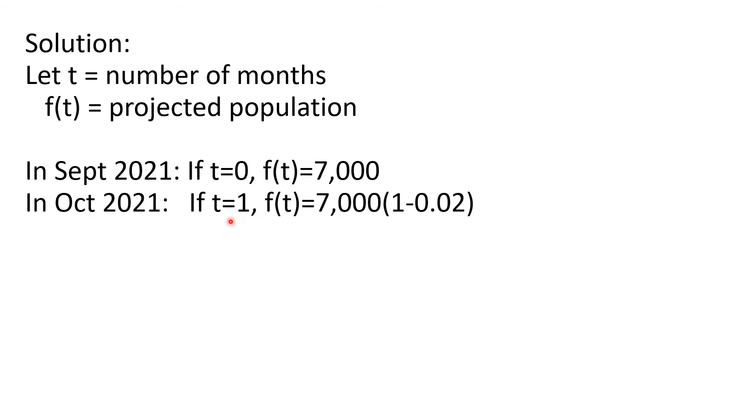After a month, when T is equal to 1, which is in October 2021, the value of F of T will be the population in September, a month ago, multiplied by the rate of decrease, which is 100% minus 2%, or 1 minus 0.02.